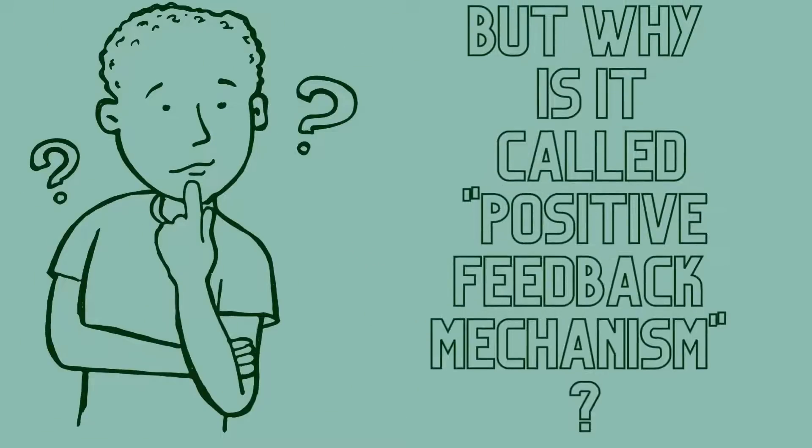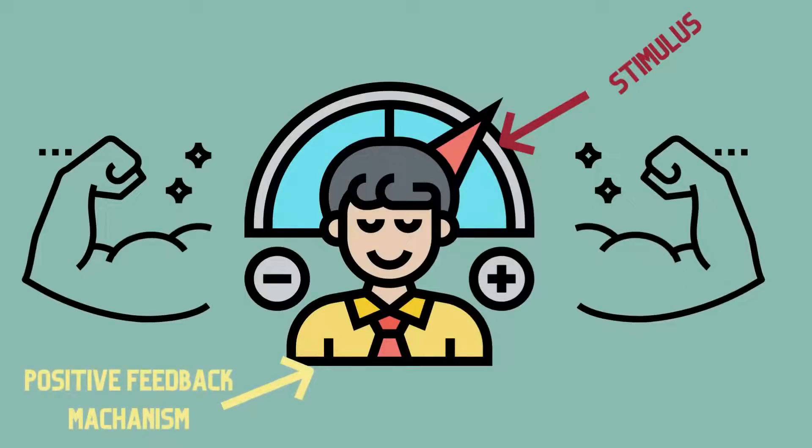Now if you haven't guessed yet, I will tell you why we call this mechanism a positive feedback mechanism. On the contrary of the negative feedback mechanism, the positive one works in a way that increases the original stimulus. It reinforces and strengthens the change that is causing a homeostatic imbalance in our body.